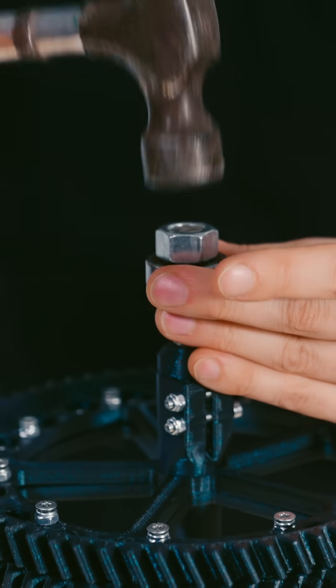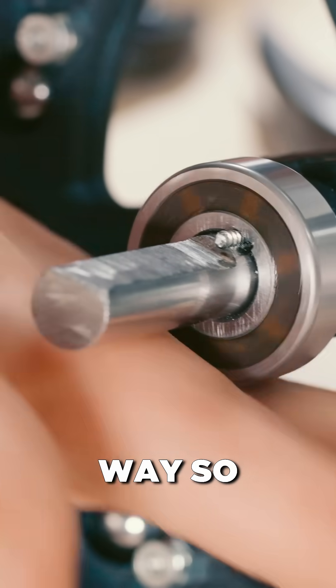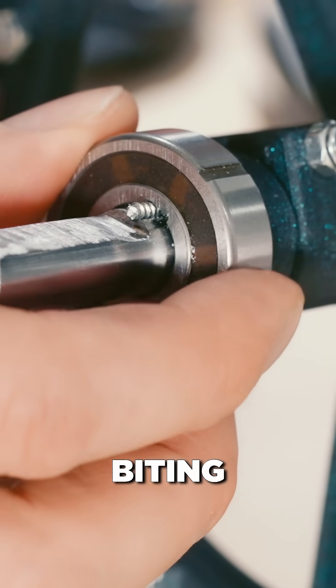I'm lining up the keyway. It spins really freely this way, but when I try to go the other way, it's like biting immediately.